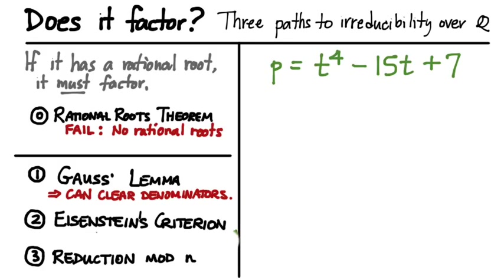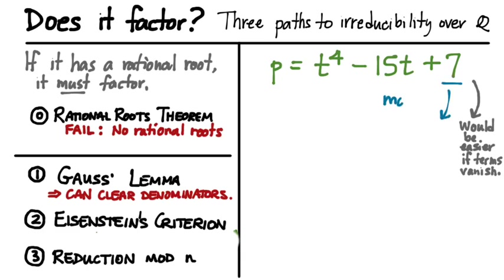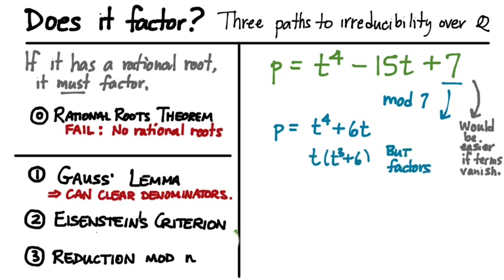Irreducibility over Z mod n implies irreducibility over Z, and therefore irreducibility over Q by Gauss's Lemma. Let's see how reduction mod n can help us show that t to the 4th minus 15t plus 7 is irreducible over the rationals. We could reduce mod 7 to make the constant term vanish, giving t to the 4th plus 6t. But that polynomial factors — we can pull a t out — so that proves nothing. Reducibility over Z mod 7 doesn't tell us anything about factorization over Z. So we'd like terms to vanish, but we'd like the result to still be demonstrably irreducible over Z mod n.